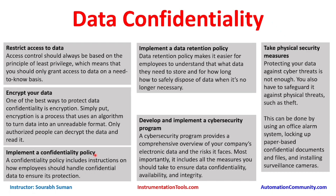The third method is to implement a confidentiality policy. A policy acts as a deterrence and includes instructions on how employees should handle confidential data to ensure its protection. Employees are legally bound to follow the policies. For example, if the policy states that confidential data must be sent through encrypted mail, everyone must abide by it. If someone violates this, alerts will be raised and proper remediation measures can be taken.